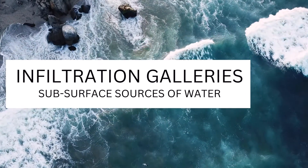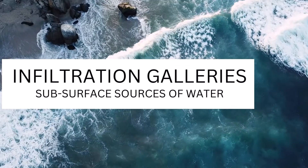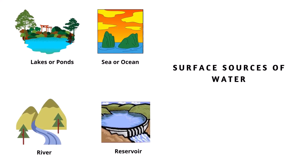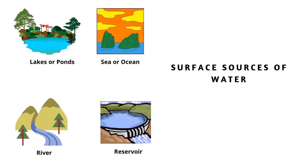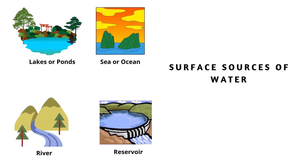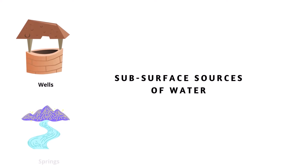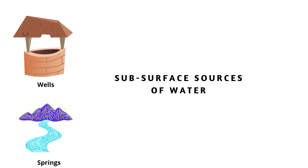Infiltration galleries are subsurface sources of water used for water supply distribution systems. There are mainly two sources of water: surface sources, which include lakes or ponds, sea or ocean, river and reservoir; and subsurface sources, which include springs, wells, and certain other structures like infiltration galleries.